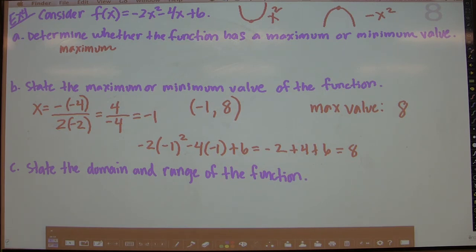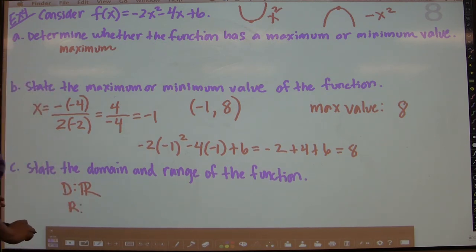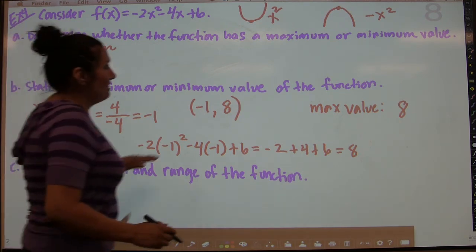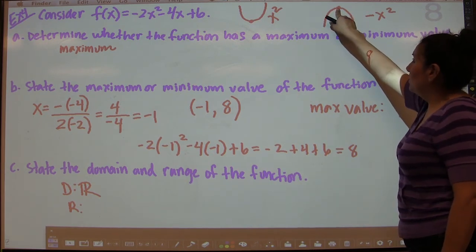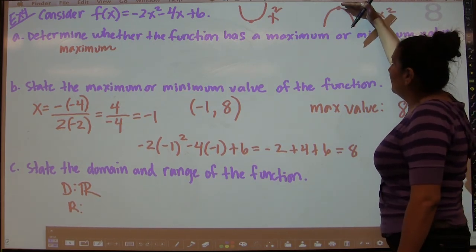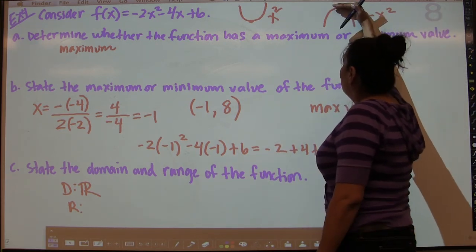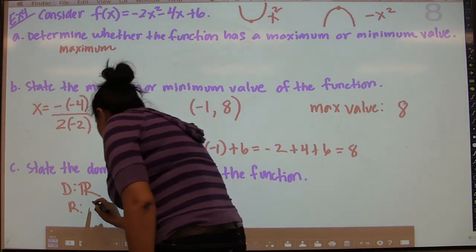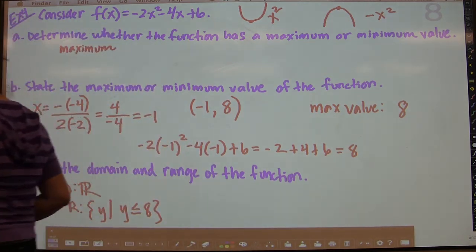For part C, the domain and range: we don't have to graph the function to know these. The domain is always all reals for a parabola. For the range, because this function is upside down with a vertex y-value of 8, the function will not go above 8. So the range is y ≤ 8.